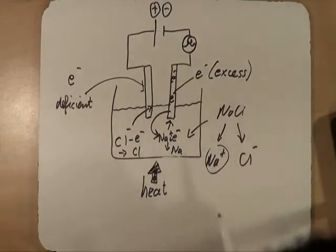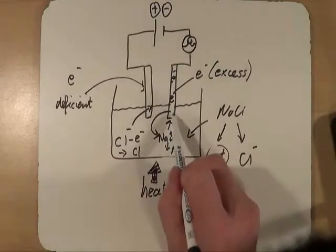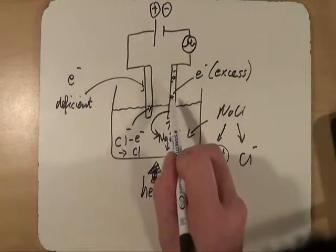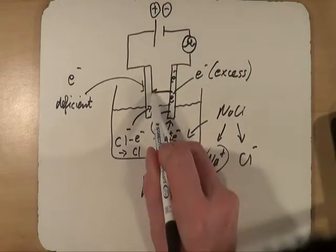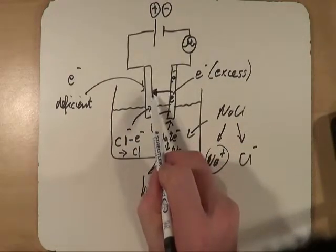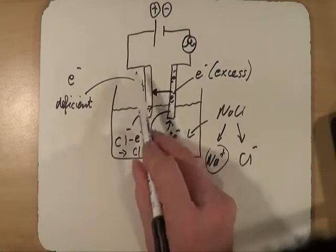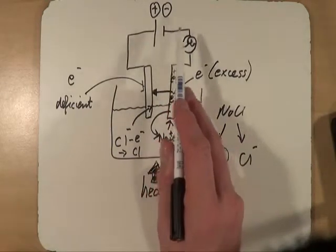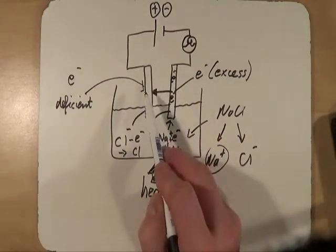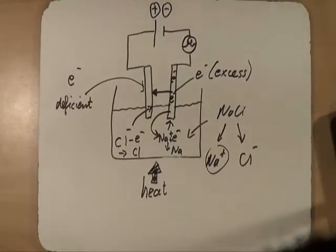So essentially what have we done? Well, here we have taken an electron off. Here we have put an electron on. So essentially we are taking electrons off here and we are putting them over there. That means that we have now completed the circuit. And electrons are able to be taken, pumped out by the cell this way, go to here, taken off here, put on there. And that means that we have therefore got a completed cell.